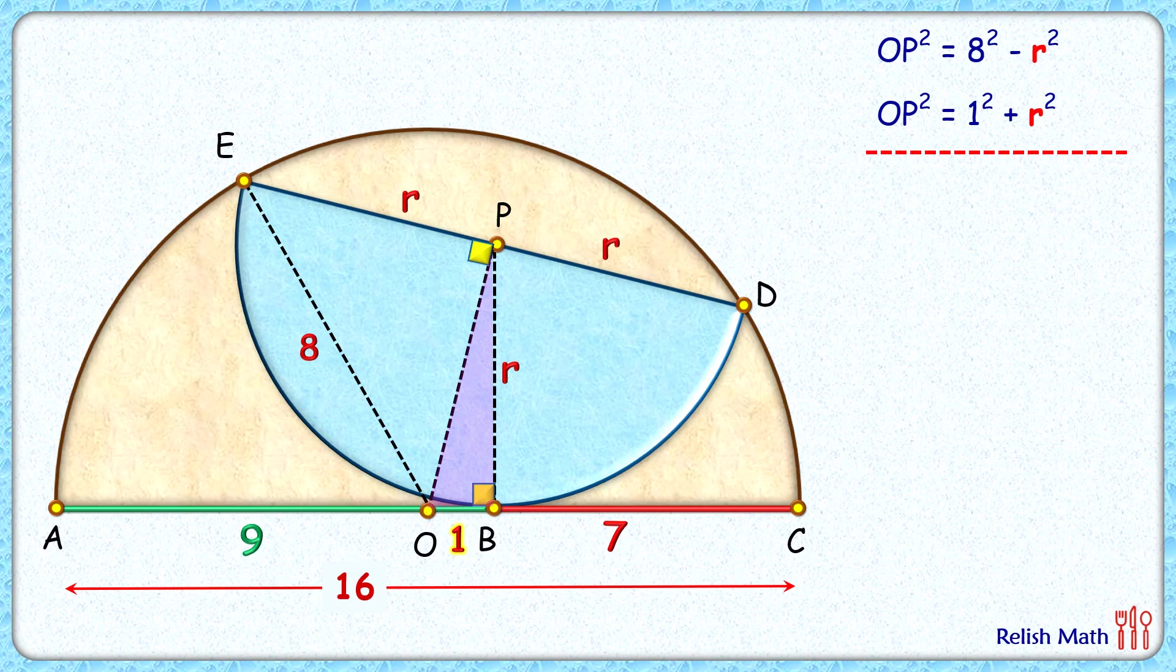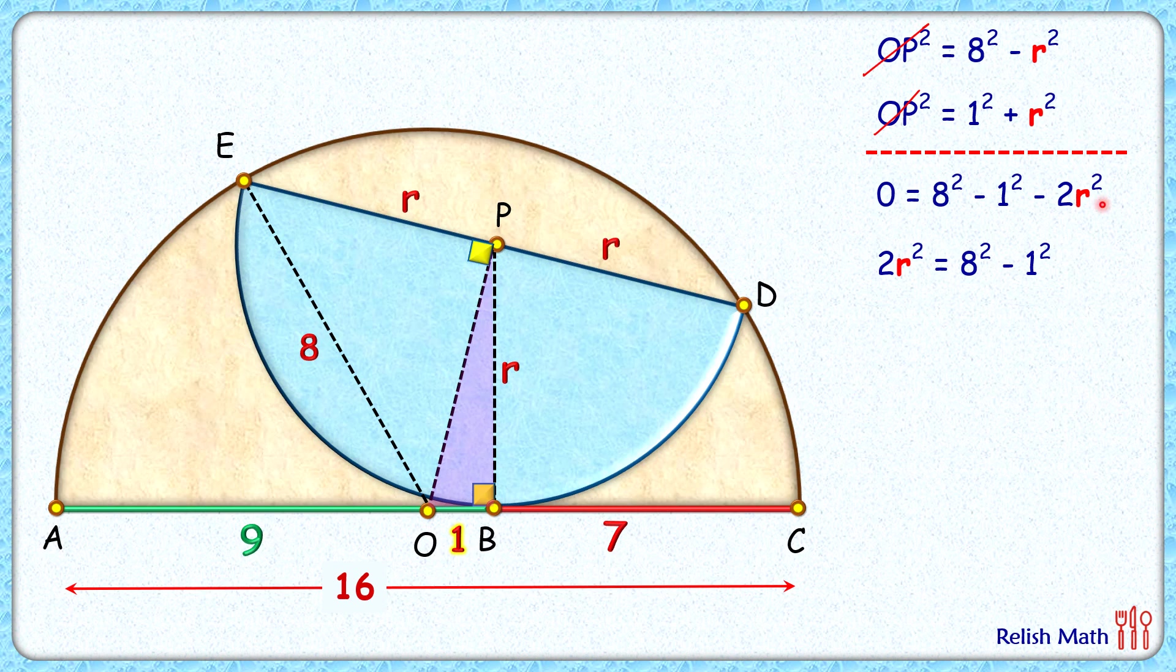We get 0 equals 8² minus 1² minus 2r². Or 2r² equals 8² minus 1². 2r² equals 64 minus 1, that's 63. r² is half of 63, or 31.5.